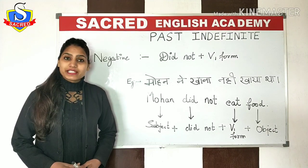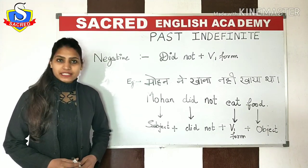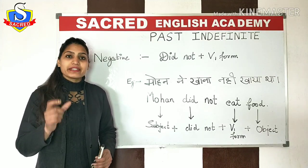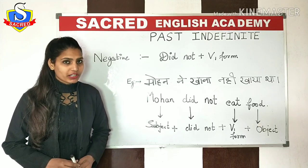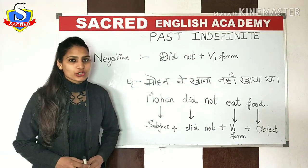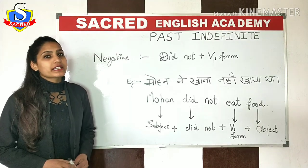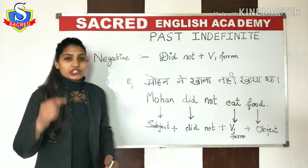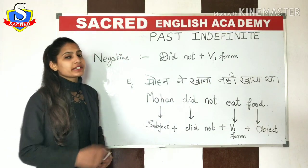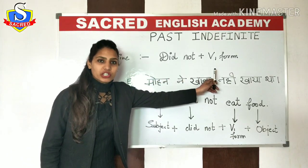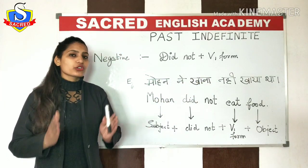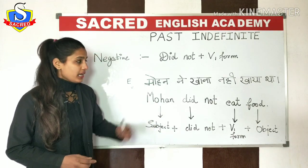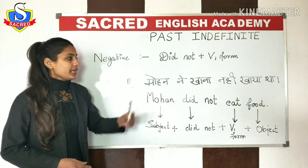Now let's move on to the negative sentence. Negative sentence ka matlab — wo baat jis mein 'na' ya 'nahi' ka istamal kiya jata hai, jo negativity ko show karta hai. In English, the rule says we have to use 'did not' plus the verb's first form. Jab bhi Past Indefinite ke under negative sentence ki baat karni hai, toh isi rule ke according chalna hai. Stick to the rule, and then your translation will be very correct. The example on the board is: 'Mohan ne khana nahi khaya tha.'